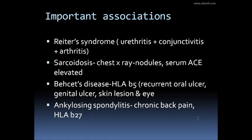In ankylosing spondylitis, the typical history is of chronic backache with HLA-B27 positivity, and patients may also have features of anterior uveitis. Behcet's disease is characterized by recurrent oral ulcers, genital ulcers, eye lesions, and skin lesions, and it is positive for HLA-B5.